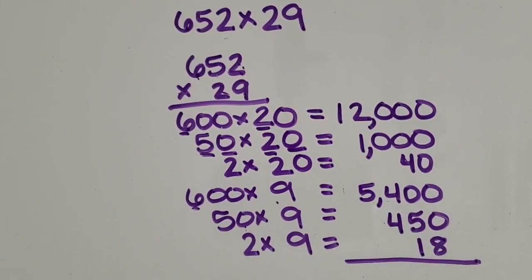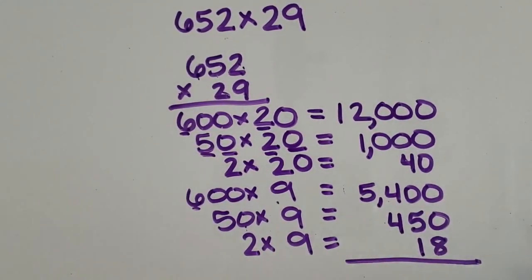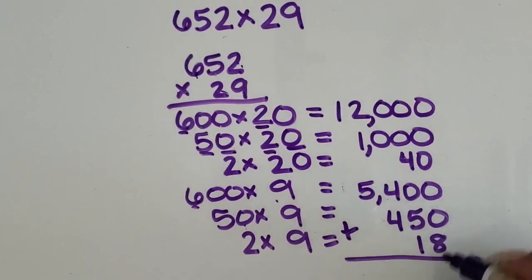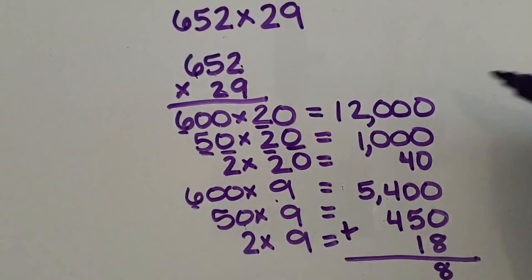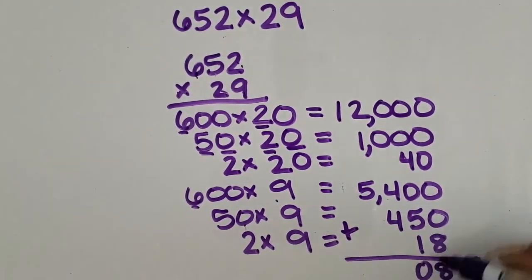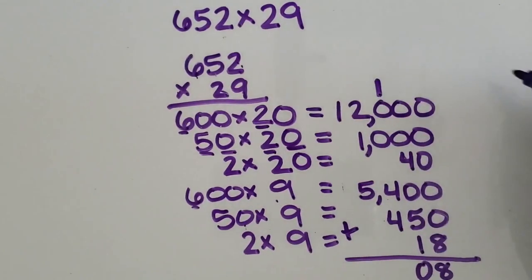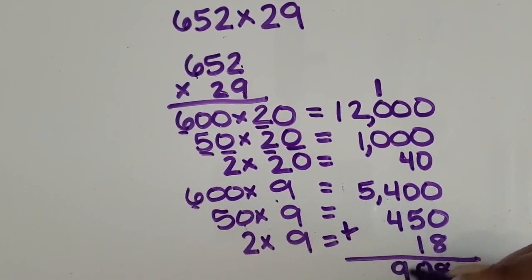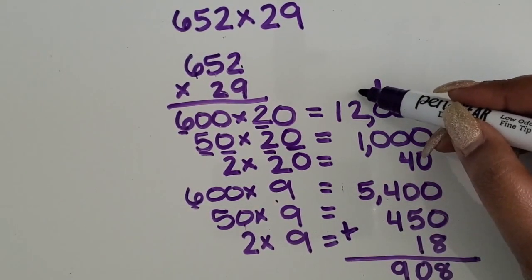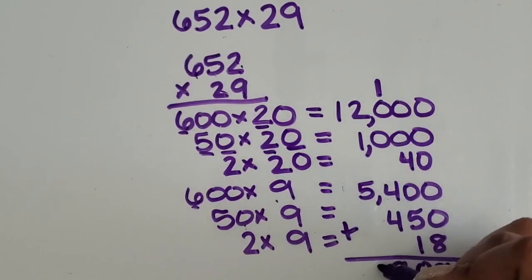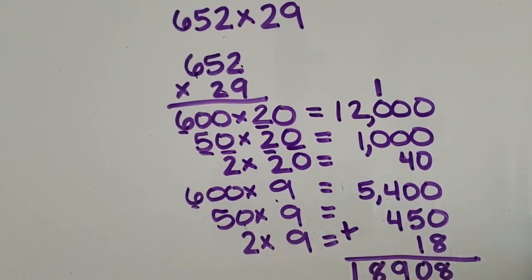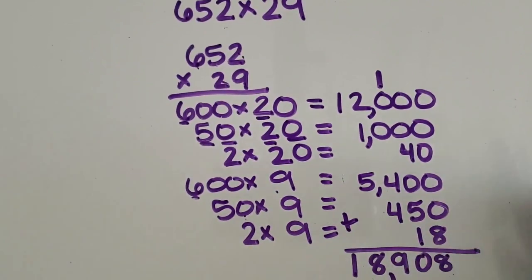Then last, you want students to add all of those partial products back together to find the total product. So in my ones place, there are 8 ones. In the tens place, there are 10 tens, so that gives us an extra 100. In the hundreds place, we have 9 hundreds. In the thousands place, we have 8 thousands. And in the ten thousands place, we just have 1 ten thousand. So our total product is 18,908.